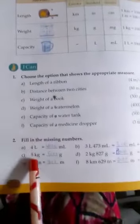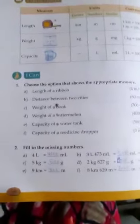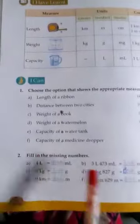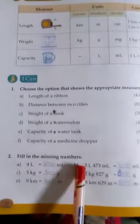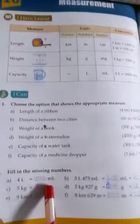Now we are going to do the second part of the I can exercise. The question is fill in the missing numbers. Part A is 4 liters equal to dash milliliters. As we know, in 1 liter there are 1000 milliliters. So in 4 liters there will be 4000 milliliters.